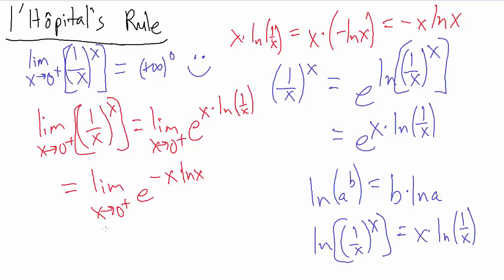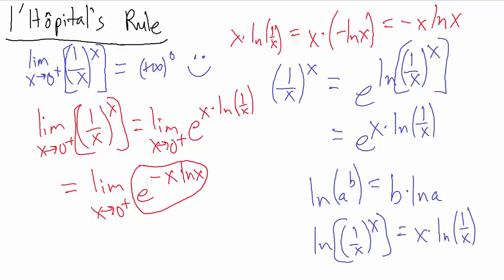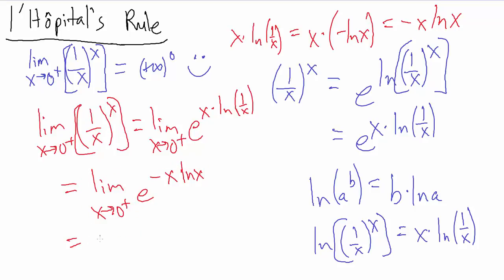Now we use the property of limits that limits can be pushed into and pulled out of continuous functions. The function e to the (−x ln x) is continuous, so we can push the limit inside the exponent. This gives us e to the limit as x goes to 0 from the positive side of negative x times natural log of x.